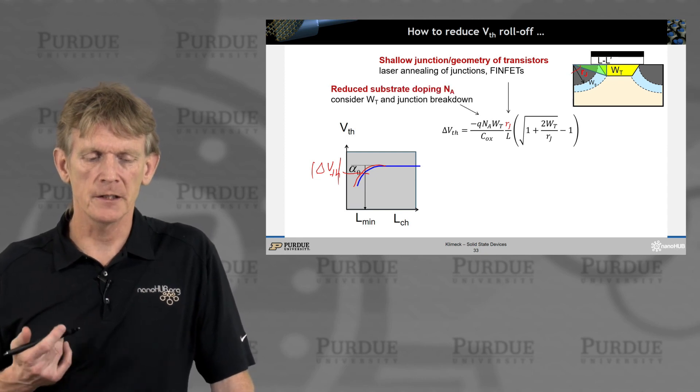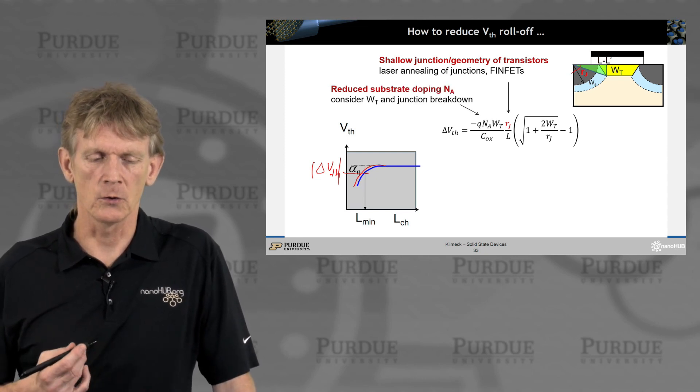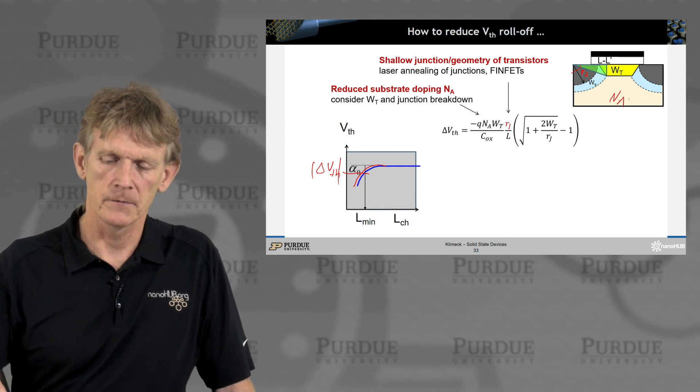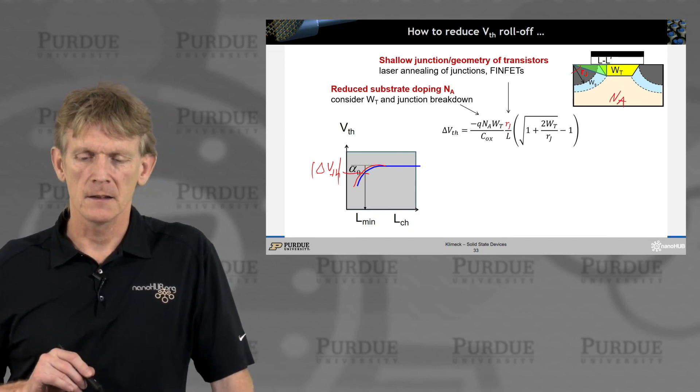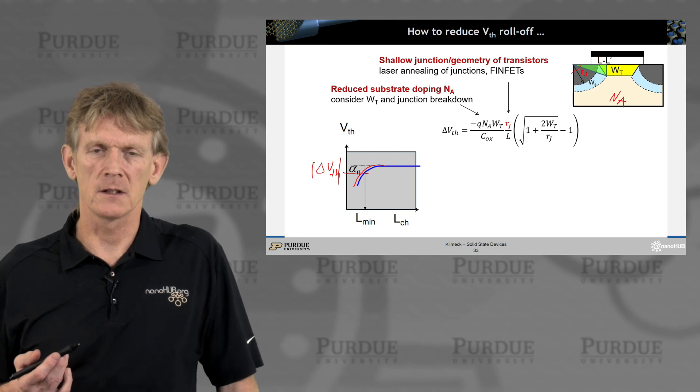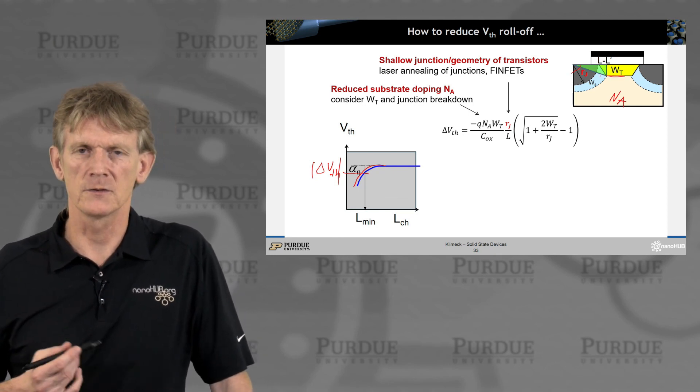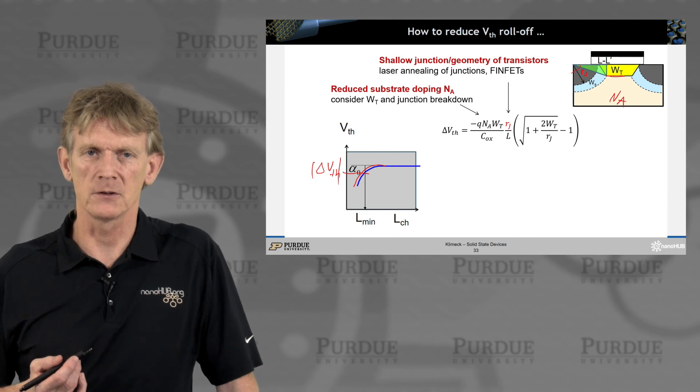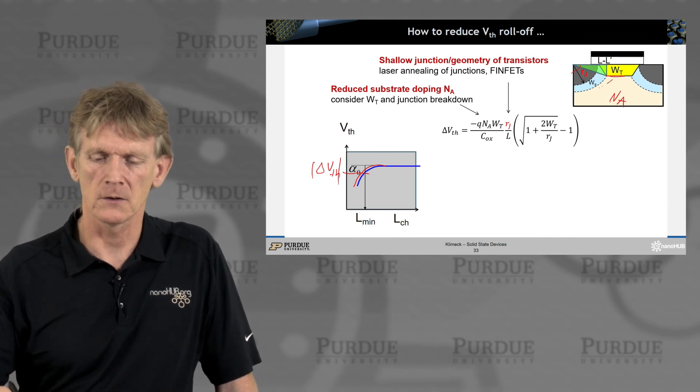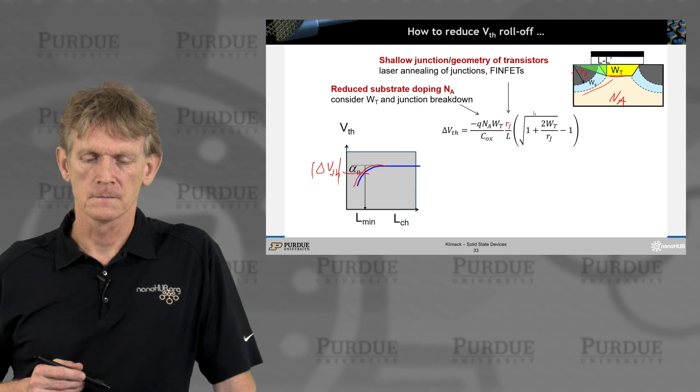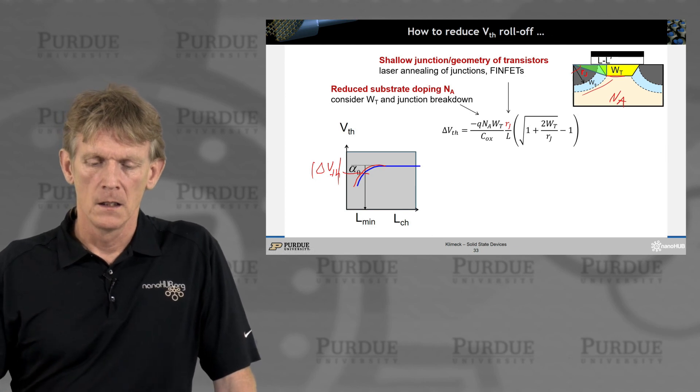You could reduce the substrate doping Na, the doping that sits here. If you do that, then you have to consider the thickness of this channel again. Consider junction breakdown, because now your depletion regions are getting also larger.